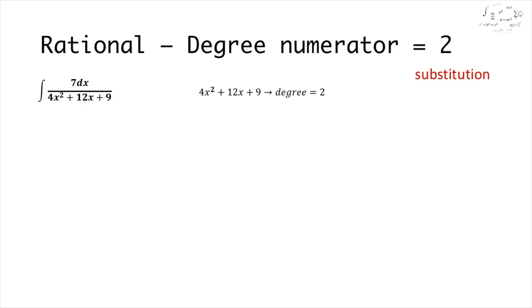Our example is integral of 70x over 4x² plus 12x plus 9 and as we can see the numerator is of degree equal to 2. If we calculate the discriminant of the polynomial then we can see that it is equal to 0 and the polynomial in the numerator can be easily written as 2x plus 3 squared.